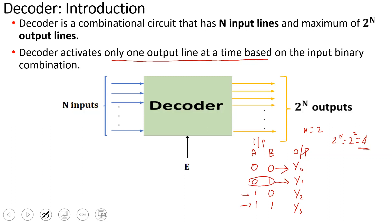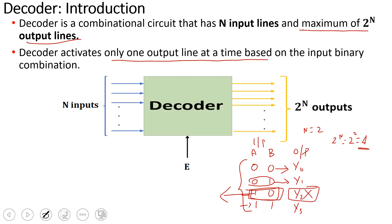The maximum of 2^n output lines — with 2 inputs there are 4 input combinations. The output can be less than or equal to 4: you can use 4 outputs, or 3, or 2, or 1. A decoder is basically a combinational circuit used to transfer binary information from the input side to the output side.